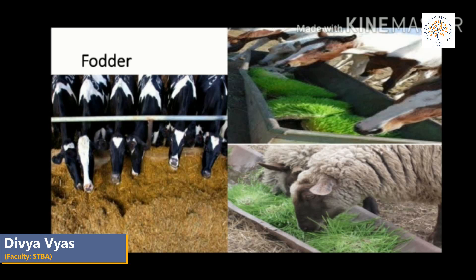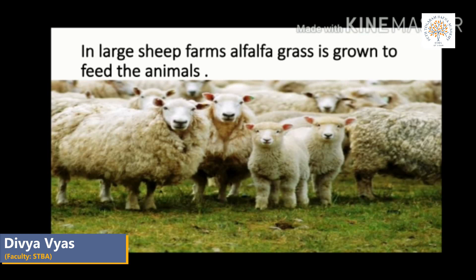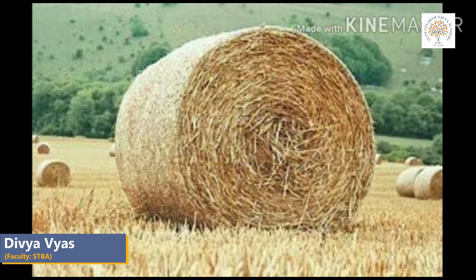Plants also provide food for animals and are a source of food for herbivorous animals. Fodder is any agricultural foodstuff used specially to feed domesticated livestock such as cattle, rabbits, sheep, horses, chickens and pigs. It refers particularly to food given to animals rather than what they forage for themselves. In large cattle and sheep farms, alfalfa grass is grown to feed the animals.